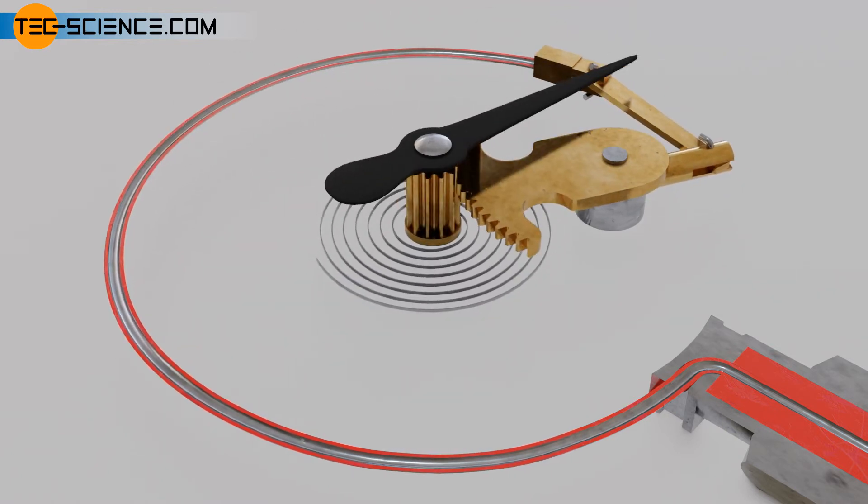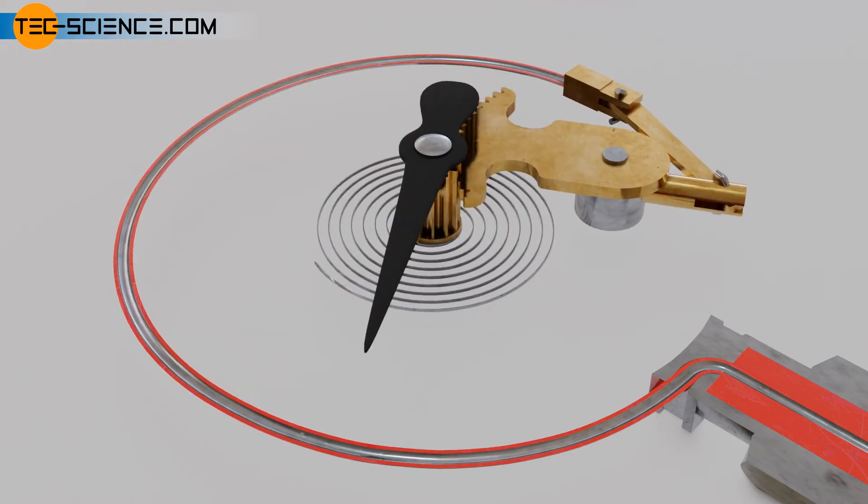To stabilize the pointer due to the backlash between rack and pinion, a hair spring is connected to the shaft of the pinion. Otherwise you would read slightly different temperatures depending on whether the temperature rises or falls, because the pinion contacts different tooth flanks of the rack.